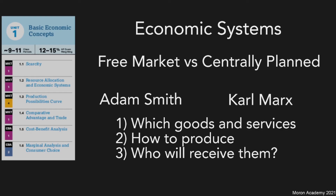In a command economy, it's the government who decides these three questions — which goods and services to produce, who will receive them, and how to produce them. A mixed economy is mostly a capitalist market, but the government will decide to intervene when it feels like there's something wrong with the system. An example, mentioned in Unit 6 of AP Macroeconomics, is when a company is causing pollution, which is a negative externality, or having a positive externality. The government will usually intervene by taxing or subsidizing a system or a company.